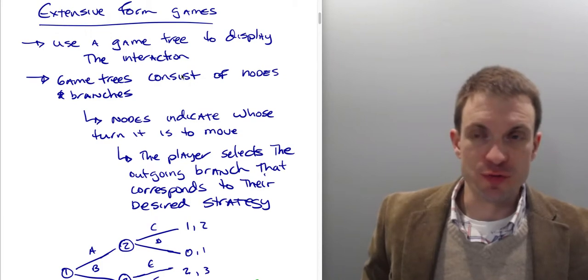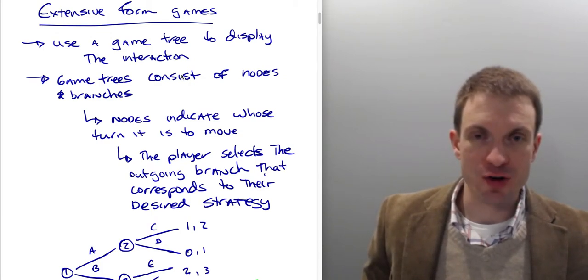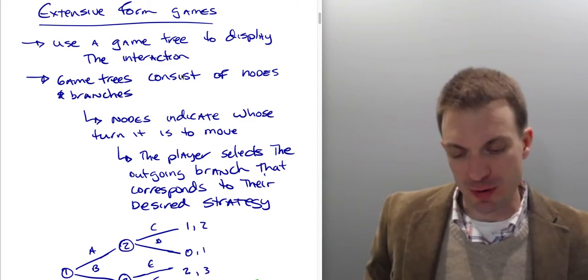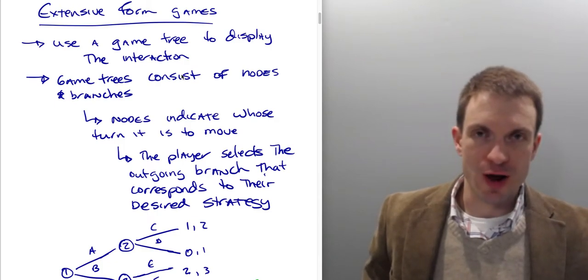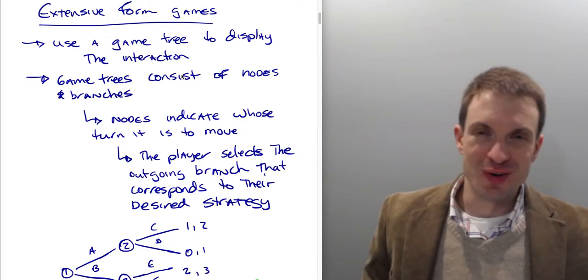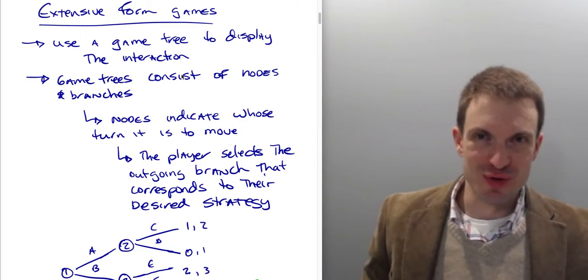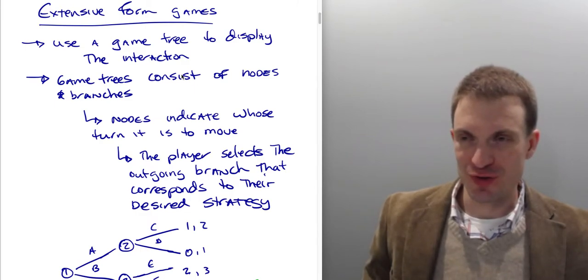Alright, so with an extensive form game, what we're doing is we are using a game tree to display the interaction. In previous games, probably the way that people are most introduced to game theory, you might see matrix games. That would be a way to describe games in strategic form or normal form. You don't need to use a matrix for normal form games because the Cournot oligopoly is a game typically modeled in strategic or normal form. We don't use a matrix there.